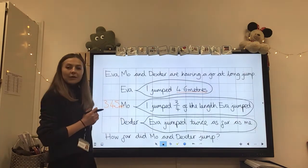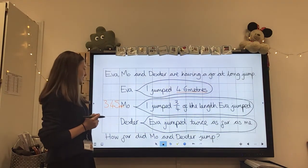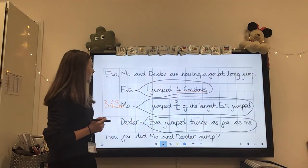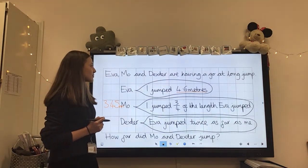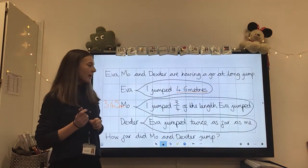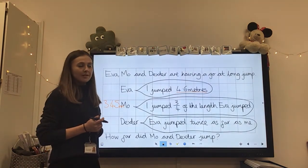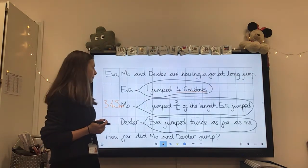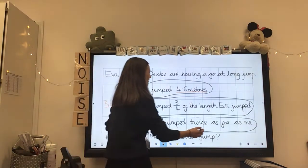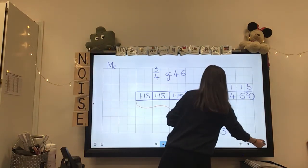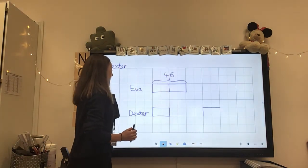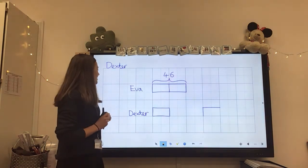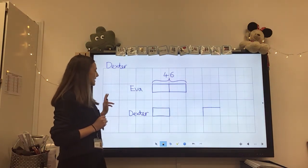Okay, now we need to have a look at how far Dexter jumped. So Dexter said, Eva jumped twice as far as me. Okay, so we know that Eva jumped 4.6 metres. And that's twice as far as what Dexter jumped. So how might we work out how far Dexter jumped? Have a think. Okay, let's have a look at this together. Here we go. So, again, I've got another bar model here.